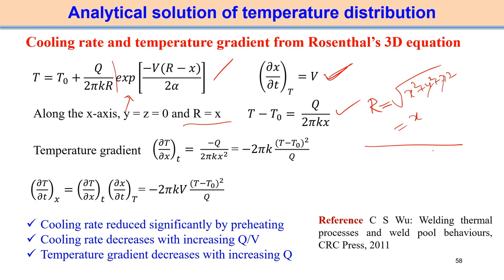The cooling rate is ∂T/∂t = (∂T/∂x) × (∂x/∂t), where ∂x/∂t = v (the welding velocity). Substituting the temperature gradient and the expression for x, we reach the expression for cooling rate: cooling rate = −2πk v (T − T0)² / Q. We can neglect the sign and focus on the magnitude.